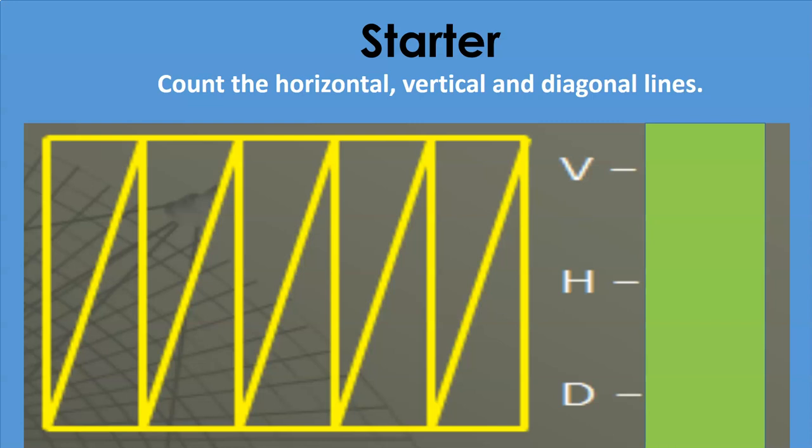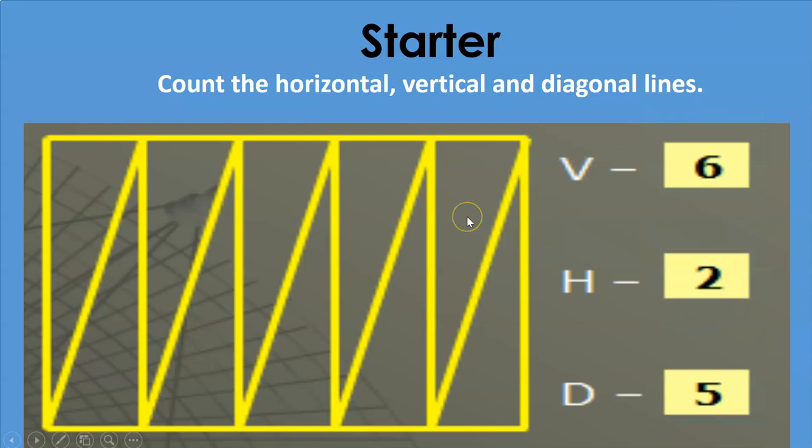Time is up, now let's reveal the answers. In this picture, there are six vertical lines, two horizontal lines, and five diagonal lines. Did you get the correct answer?